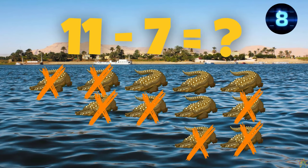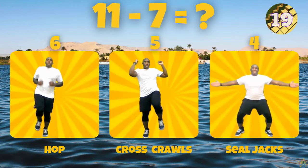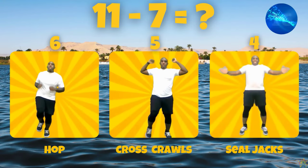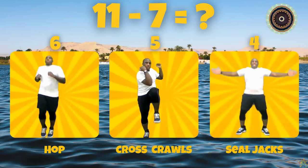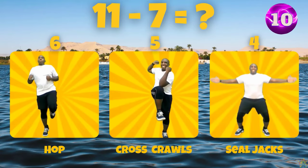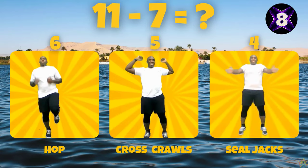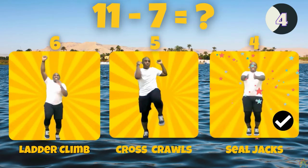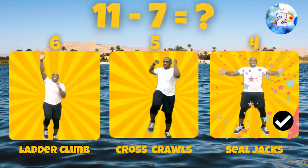What is 11 minus 7? Does 11 minus 7 equal 6, 5, or 4? 11 minus 7 equals 4.